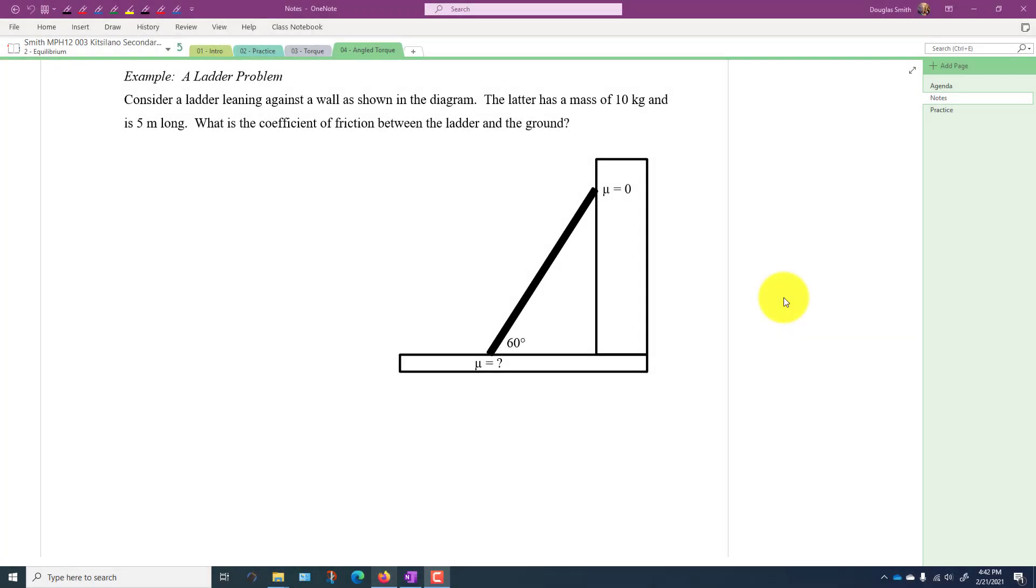Okay, so this ladder problem is like a type of problem we get in these equilibrium units. But really there's nothing specific about it in terms of new knowledge. It's applying the idea of balanced forces, translational forces in the x and y directions that are equal to zero, and that the torques are balanced. When we calculate torque, we have to use the perpendicular force acting on the lever arm.